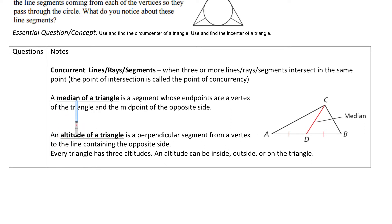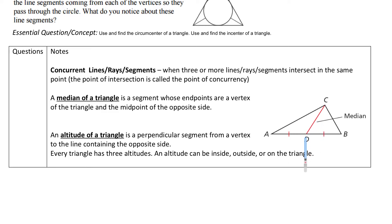Then we've got a median of a triangle, and a median is a segment whose endpoints are a vertex of the triangle and the midpoint of the opposite side. So take a look at this median — it starts at the vertex of a triangle and goes to the midpoint. D is our midpoint, so this is our median. It starts at C, at the vertex, and goes to the midpoint of the opposite side.